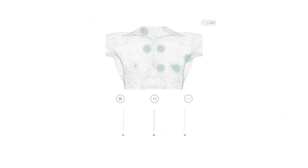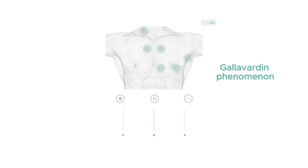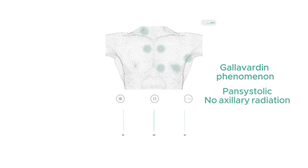Sometimes a pansystolic murmur can also be heard in the apical area in patients with aortic stenosis. This is called the Gallavardin phenomenon and is due to a separation of the components of the murmur into a harsh, loud component at the right upper sternal border and a quieter, high-frequency, musical component at the apex. This latter is thought to be due to vibration of aortic cusps rather than turbulent blood flow. This sound can be confused with mitral regurgitation, but in contrast it does not radiate to the axilla.